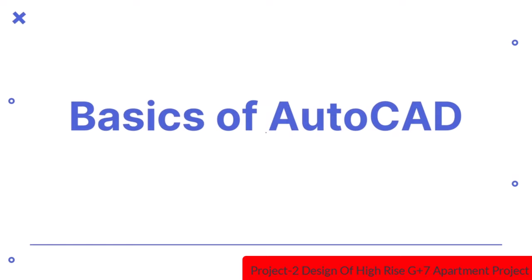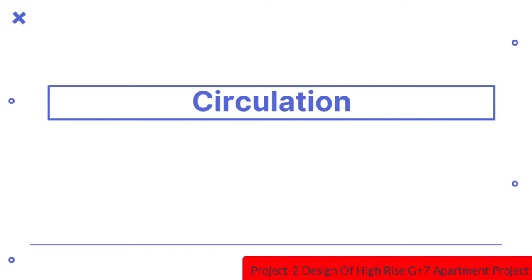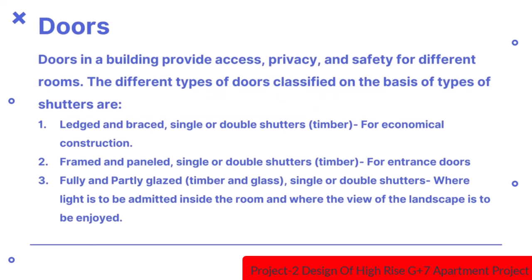In this video, we will learn about circulation. The first part is doors. Doors in a building provide access, privacy and safety for different rooms. The different types of doors classified on the basis of types of shutters are: ledge and braced single or double shutters made from timber, suitable for economical construction.